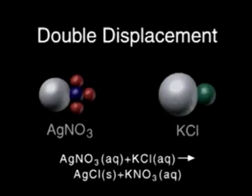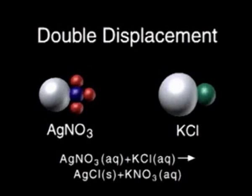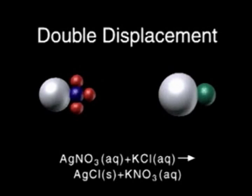In a double displacement reaction, the positive and negative portions of two ionic compounds interchange.